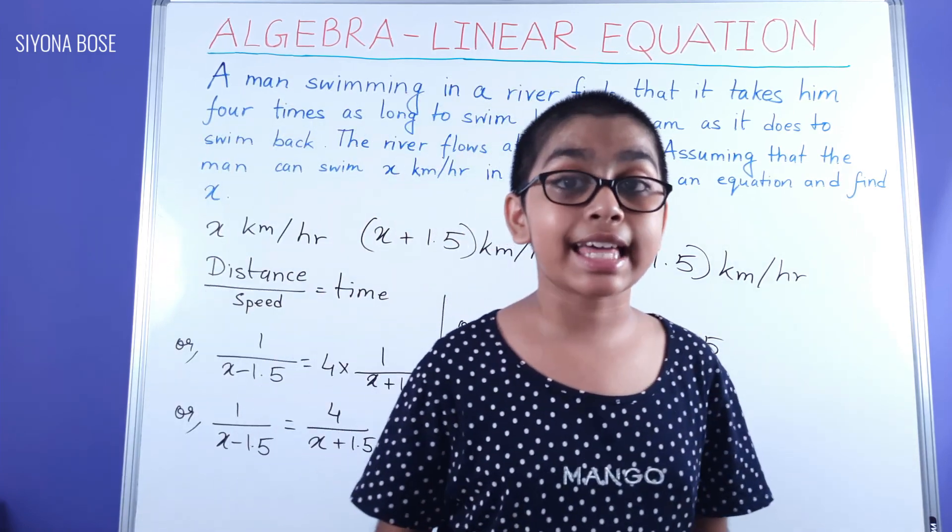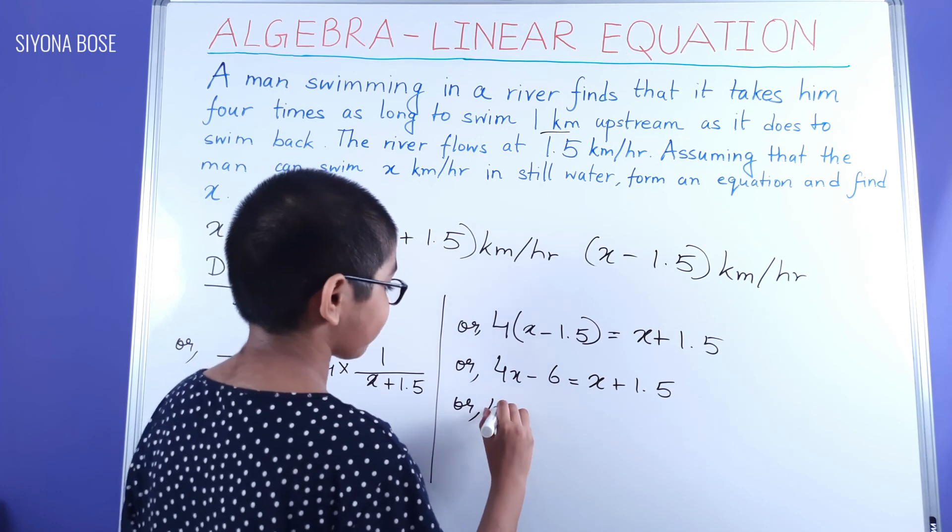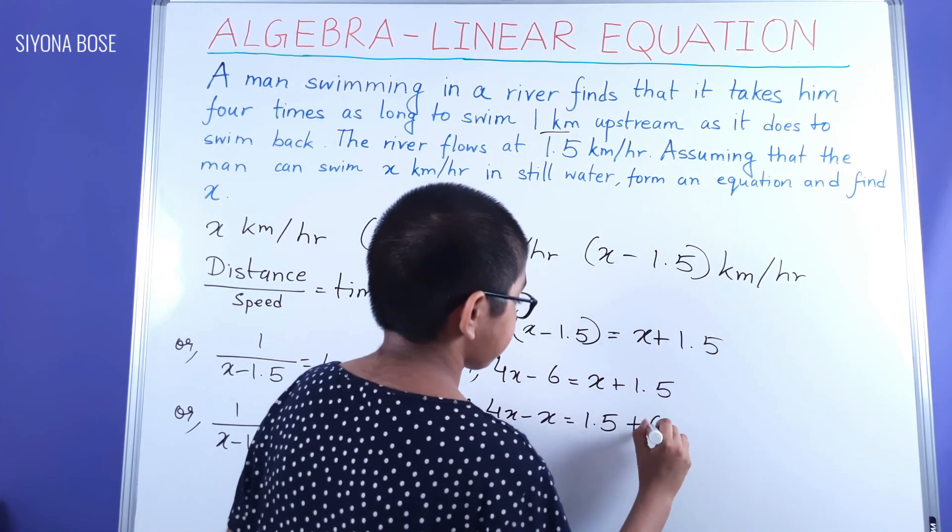And we do a transposition, take the X terms together and constants together. We get four X minus X equal to 1.5 plus six.